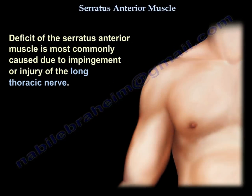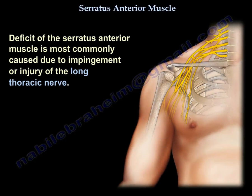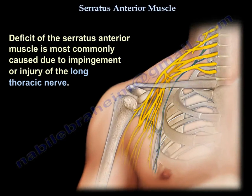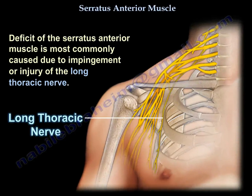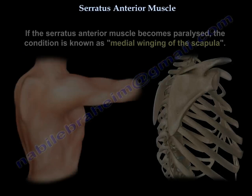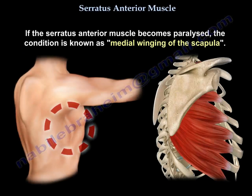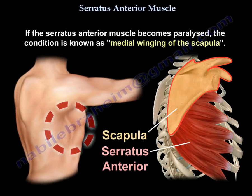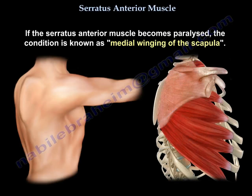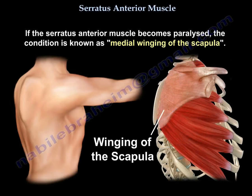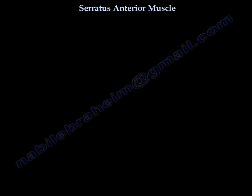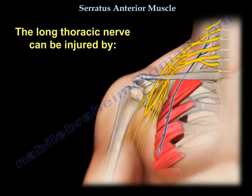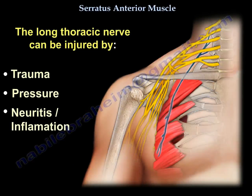Deficit of the serratus anterior muscle is most commonly caused by impingement or injury of the long thoracic nerve. If the serratus anterior muscle becomes paralyzed, the condition is known as medial winging of the scapula. The long thoracic nerve can be injured by trauma, pressure, neuritis and inflammation, and by surgery.